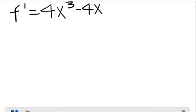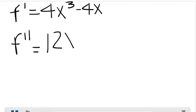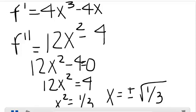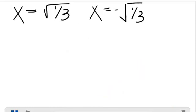The next thing we want to do is find the intervals of concavity. To find the intervals of concavity, the first step is to find f double prime. f double prime equals 12x² - 4. Now we find the critical points of f double prime by setting 12x² - 4 equal to 0. Our critical points are x equals plus or minus root one-third. We now put our critical points on a number line — make sure to label it f double prime.